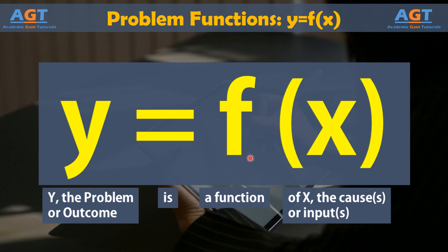We can see this function in two ways and understand it easily. Perspective 1: the problem y is a function of x, where x is the cause of this problem. In other words, x is the function or cause that resulted in the problem y.